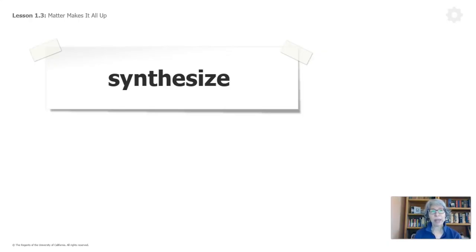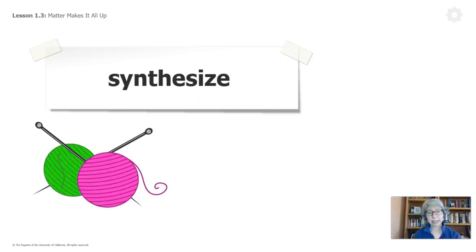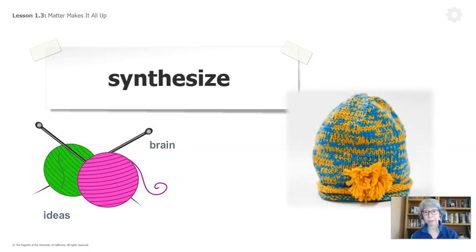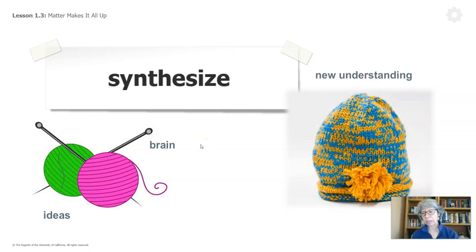To synthesize, I want to create a metaphor — we did this in lesson three as well. If you think of your ideas as different spools of yarn, different balls of yarn, and if you think of the knitting needles as your brain, as you learn from these different sources, these different ideas come together. Your brain actually knits them together, like this hat. You are making some new understanding. That's what we mean by synthesizing.